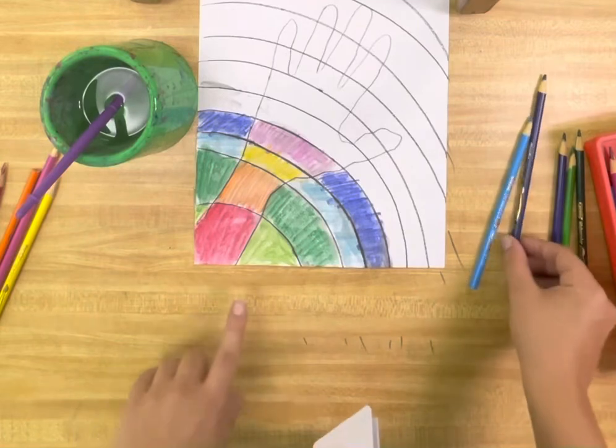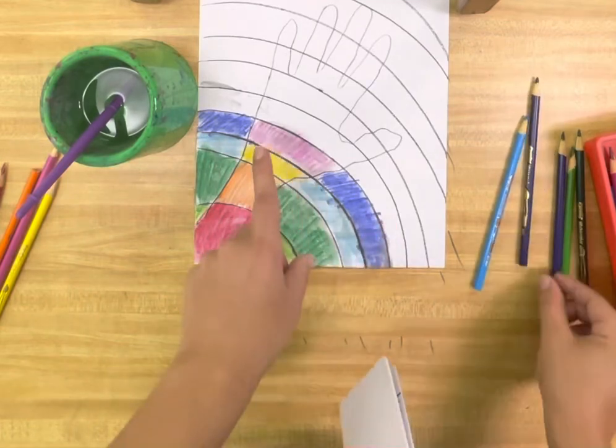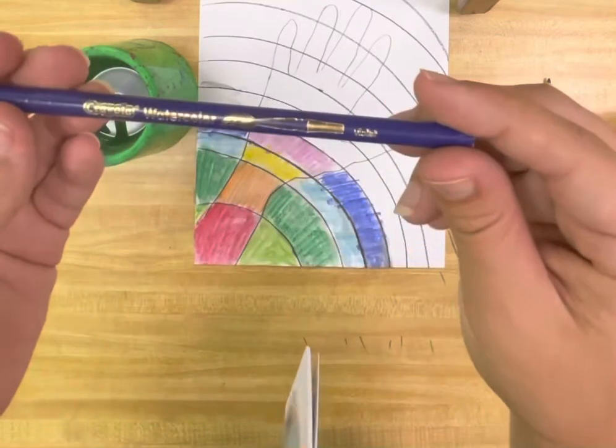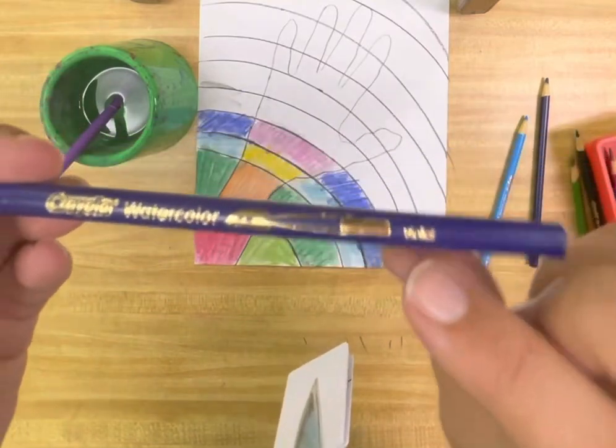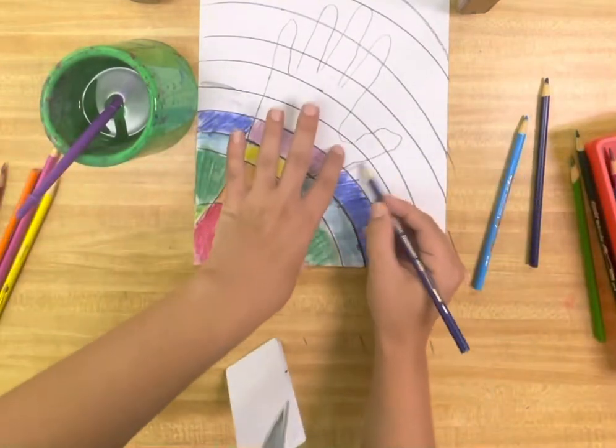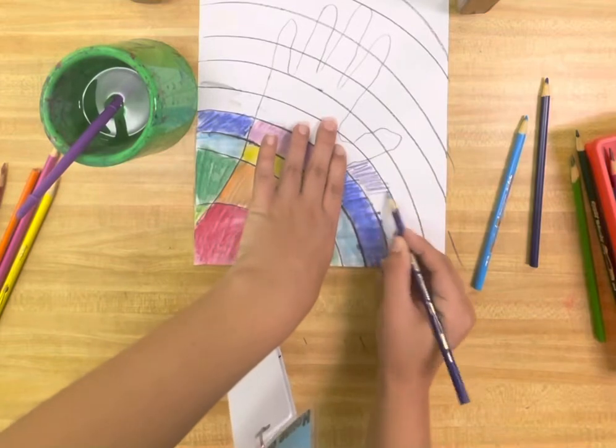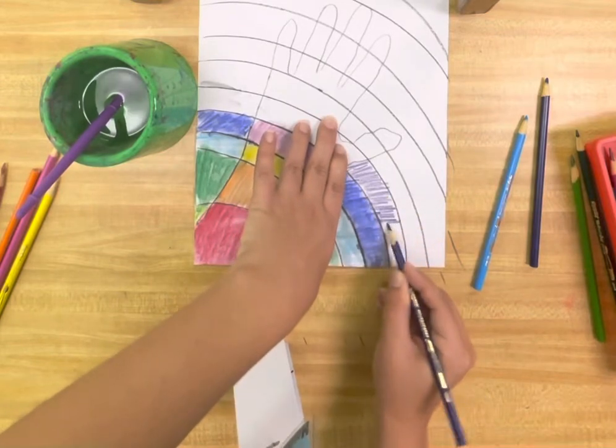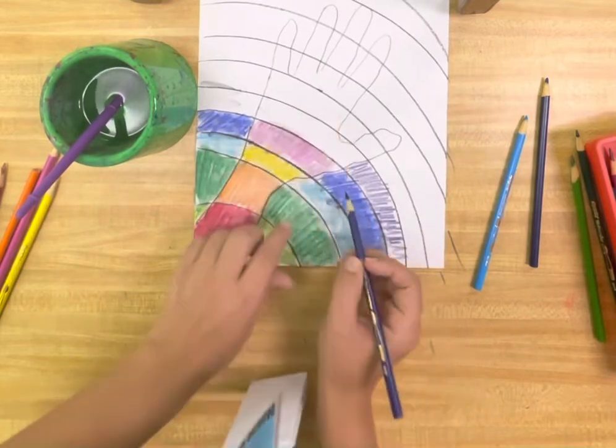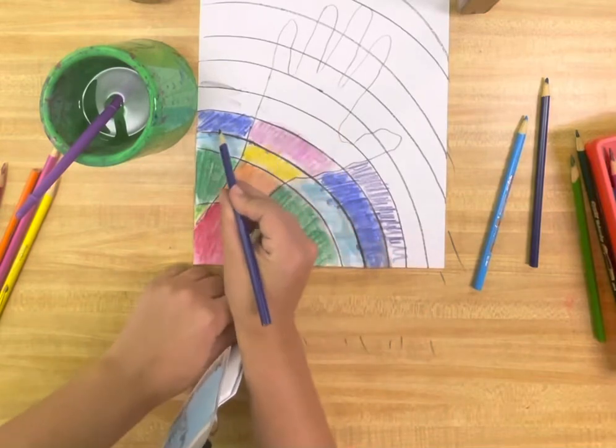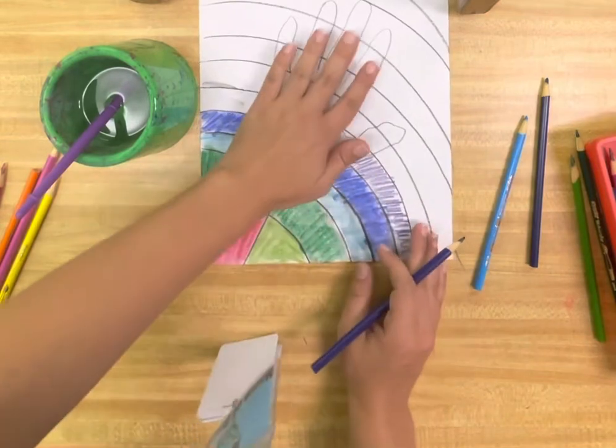And the last color I would need to do would be purple, which these pencils say violet, which is kind of hard to read, but it says violet. Now the mistake that a lot of students make is that they accidentally color the whole thing, but you need to just stop wherever the hand is.